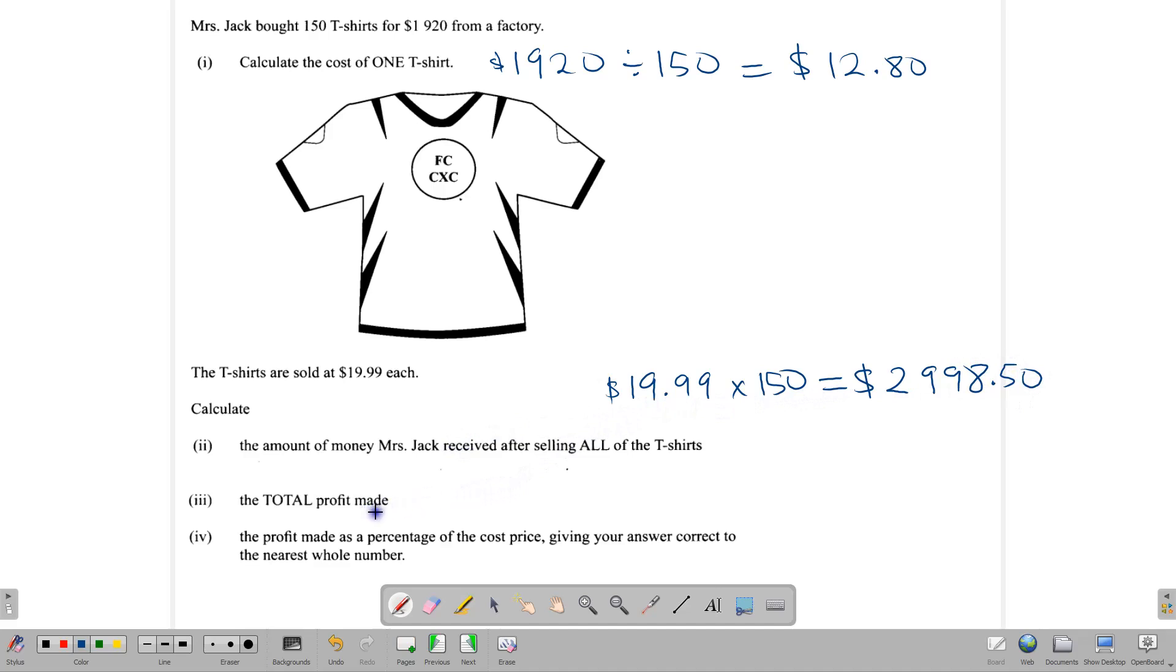The third part says, what is the total profit made? Well, this here is our cost price. Our cost price is $1,920. Our selling price is $2,998.50. So this is our cost price, and this is our selling price.